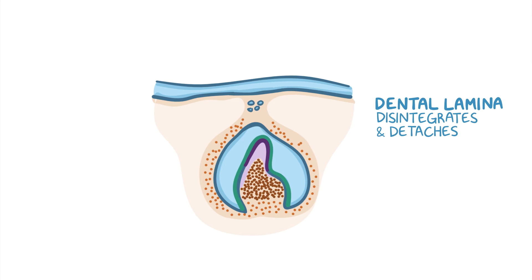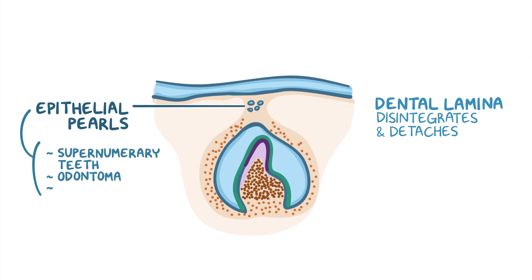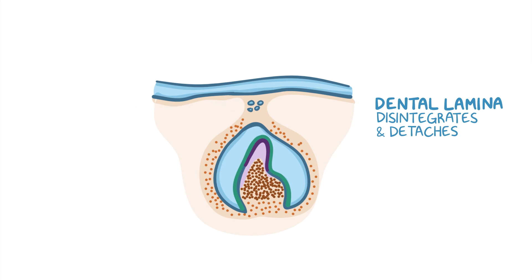Sometimes, when the dental lamina degenerates, it may leave behind nests of epithelial cells called epithelial pearls. These epithelial pearls can give rise to a number of abnormalities in the future, such as supernumerary teeth, odontoma, and eruption cysts.